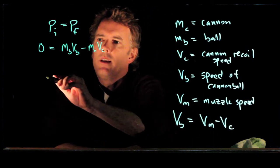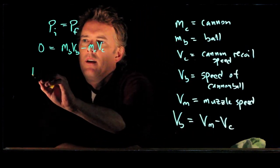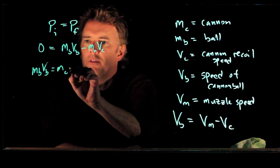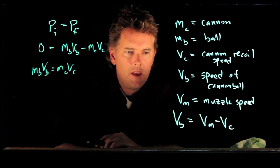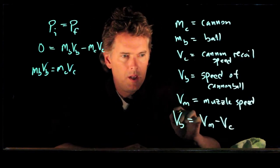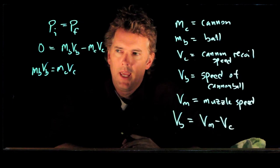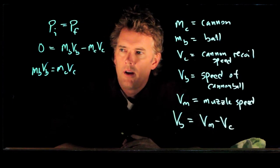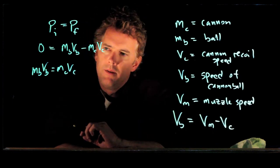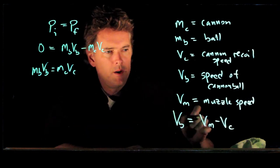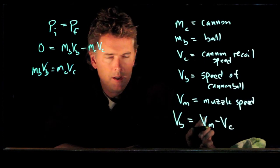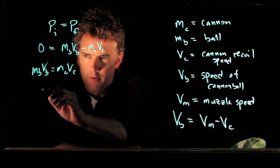Now we can write M sub B times V sub B equals M sub C times V sub C. But we also have this relationship between V sub B, the muzzle speed, and the cannon speed. Let's say we are trying to solve this for V sub B. We can rewrite this expression and solve it for V sub C over here.